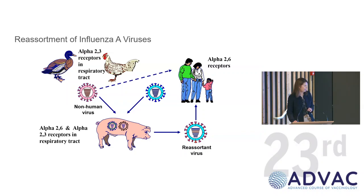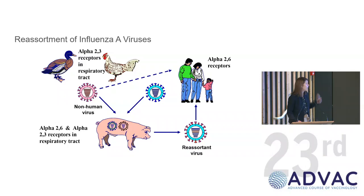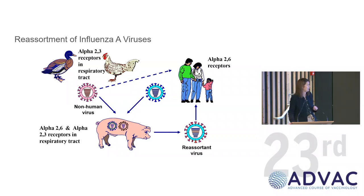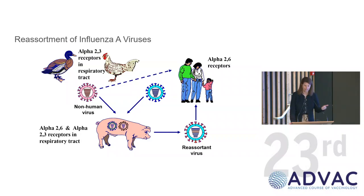Humans share receptors with pigs. We don't share receptors with birds, but pigs share receptors with both. Some people refer to pigs as a mixing vessel. And we're seeing unprecedented avian influenza right now — outbreaks in domestic poultry, in wild birds, and then infections of humans in Russia, China, perhaps one case in the U.S. This happens regularly and frequently, and it's only when these viruses are viable and transmissible that we really have a problem.